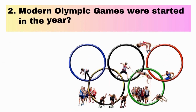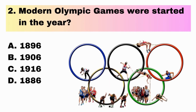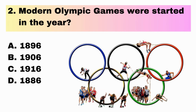Question 2. Modern Olympic Games were started in the year. A. 1896, B. 1906, C. 1916, D. 1886. Answer is A. 1896.